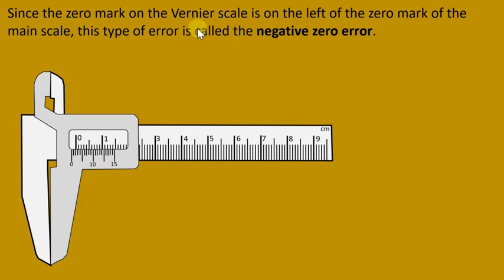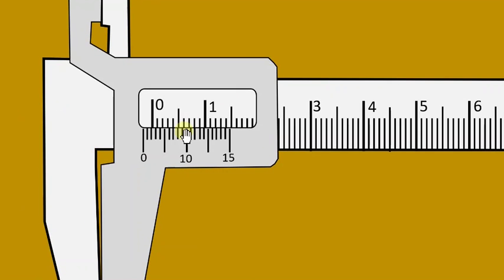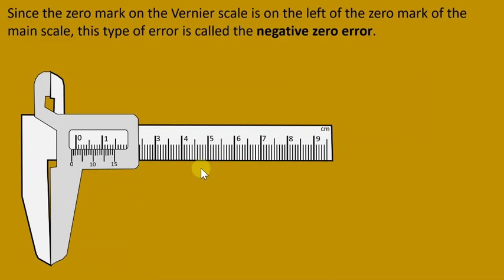Since the zero mark on the Vernier scale is on the left side of the zero mark of the main scale, this type of error is called the negative zero error.